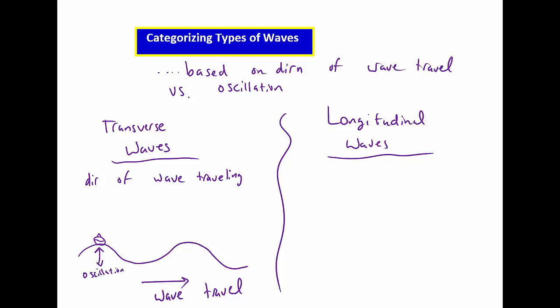So if the direction of the wave travel is perpendicular, 90 degrees to the direction of the oscillation, we have a transverse wave.